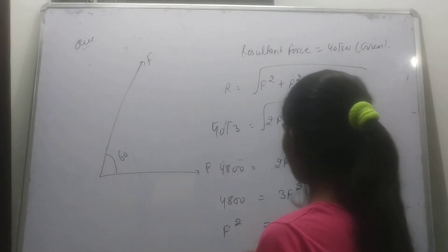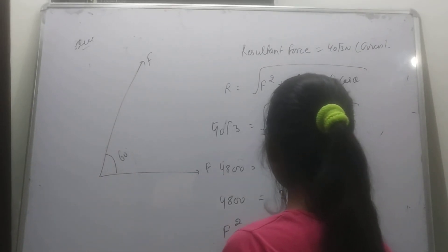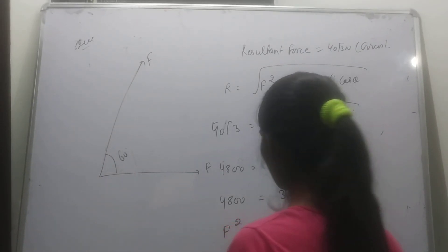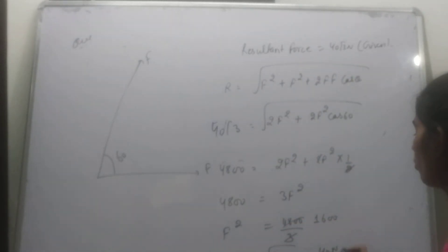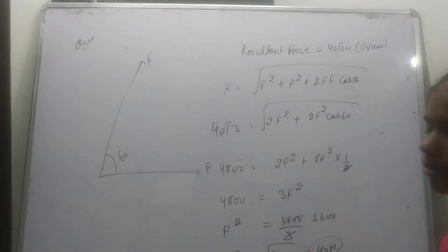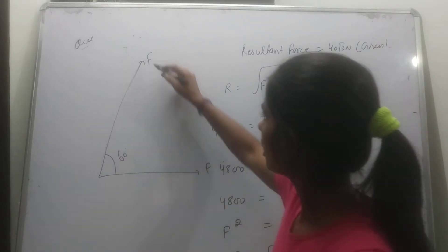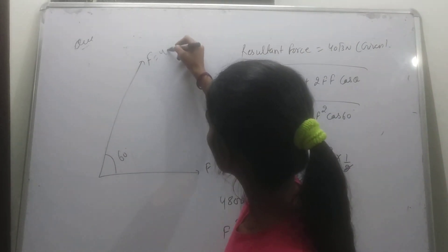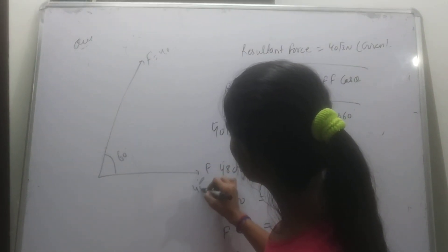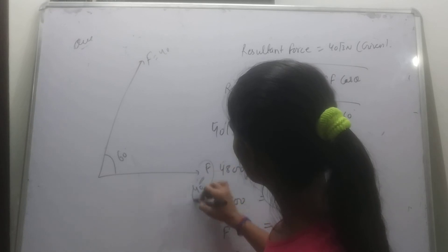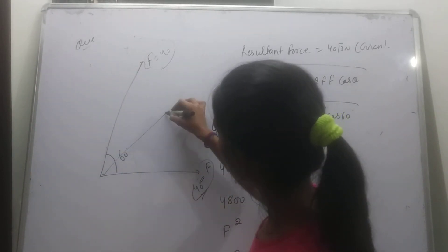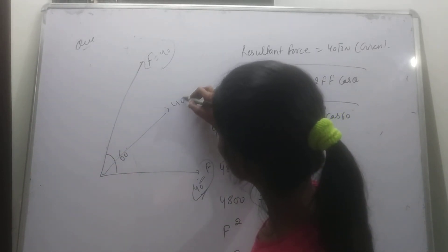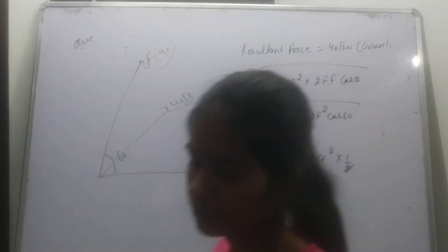Each force is 40 newtons. The angle is 60 degrees and the resultant vector is 40√3 N.